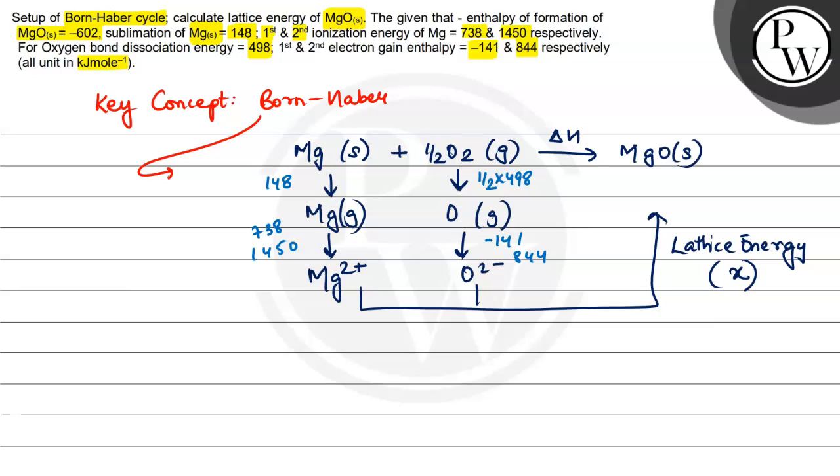So let's write this reaction. So what will be the enthalpy of reaction? The enthalpy of reaction is minus 602, right? Minus 602. Let's also write it in the diagram. Minus 602.